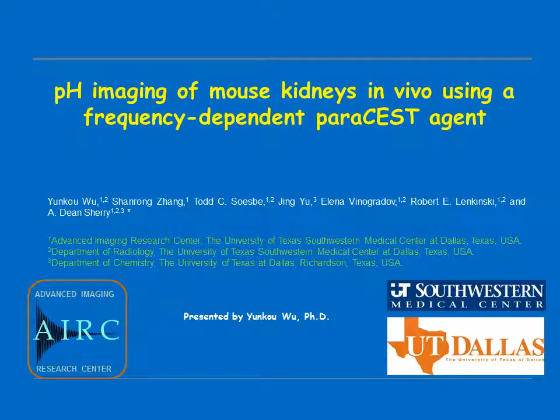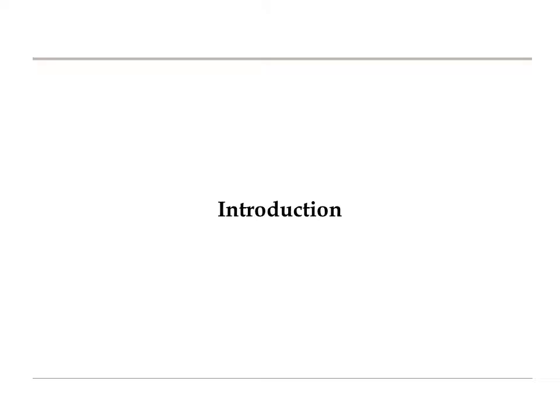Here I would like to talk about our recent work on the use of a frequency-dependent paraCEST agent for pH imaging of mouse kidneys in vivo. The reason why people are interested in pH imaging is because the dysregulation of pH in vivo is associated with many diseases such as cancer or renal tubular acidosis. Therefore, finding a simple method to image tissue pH in vivo is one of the goals in MR imaging research.